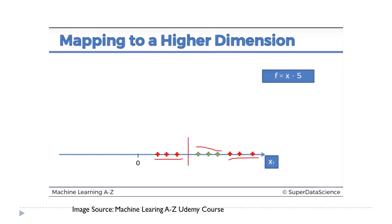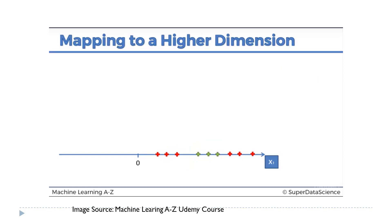If we draw a hyperplane at one point, it is not correct because on the left side we have data points of a single class but on the right side we have data points of both classes. Similarly, another candidate hyperplane is also incorrect because on the right side there is only one class while on the left side there is mixing of both classes. This is actually a case of a nonlinear dataset, and only a nonlinear hyperplane can correctly classify these data points.